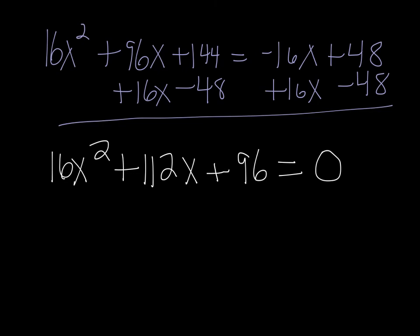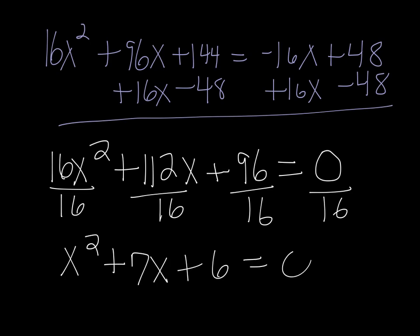So 16x squared plus 112x plus 96 equals zero. Luckily, 112 and 96 are both divisible by 16, so we can divide both sides, every term, by 16. And get x squared plus 7x plus 6 is equal to zero.